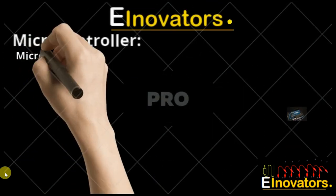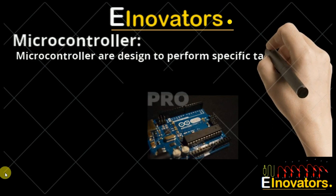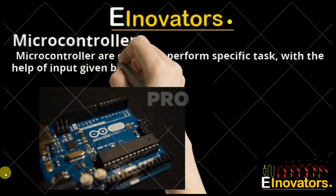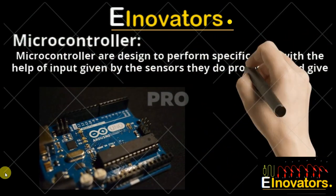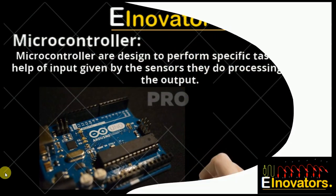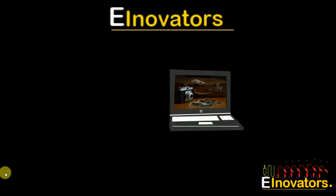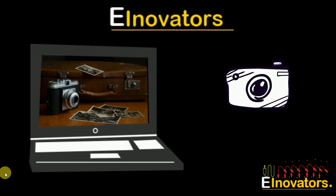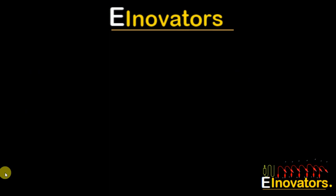Microcontrollers are designed to perform specific tasks. With the help of the input given by the sensor, they do processing and give the output. For example, microcontrollers are used in digital cameras and washing machines. In a digital camera, when the flash is pressed, input will go to the microcontroller, it will capture the image, and on the output we will get a picture on the screen.